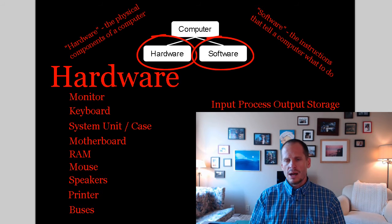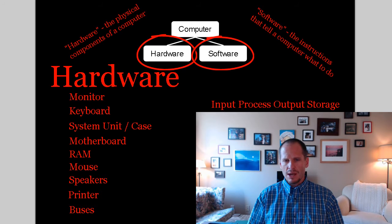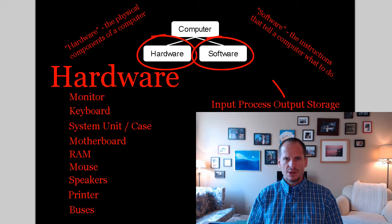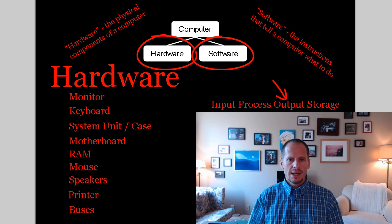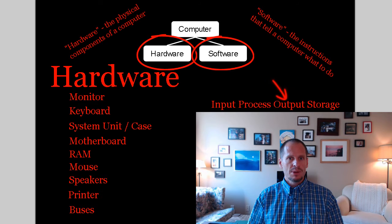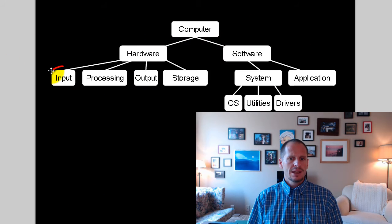What about your monitor? Which one would that be — input, processing, output, or storage? Your monitor would be an output device. So we could further categorize hardware based upon whether or not it's an input, a processing, an output, or a storage device.